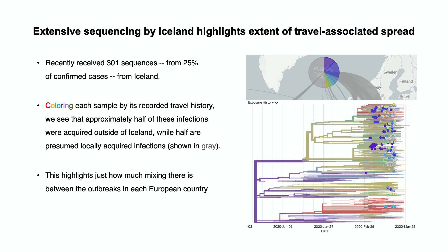For Europe, we have updates for Iceland and Austria. We recently received 301 sequences from 25% of the confirmed cases from Iceland. Coloring each sample by its recorded travel history, we see that approximately half of these infections were acquired outside of Iceland, while half are presumed locally acquired infections. This highlights just how much mixing there is between outbreaks in each European country.